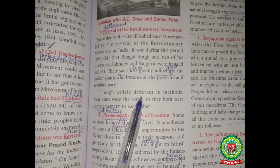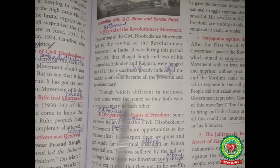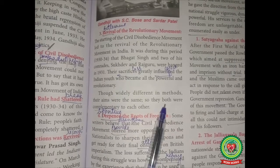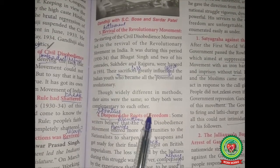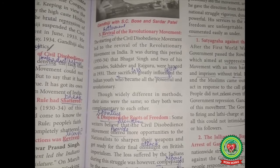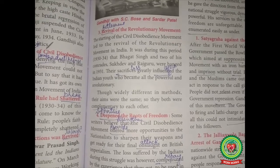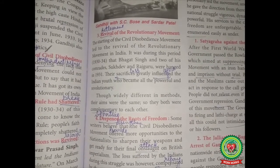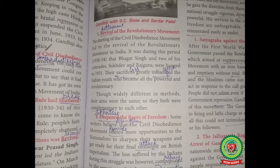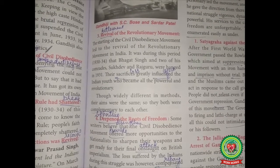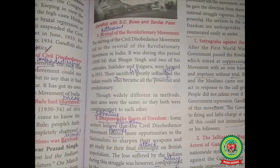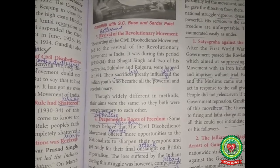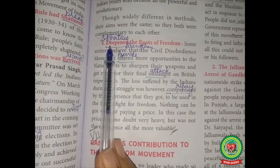Though widely different in methods, their aims were the same, so they were complementary to each other. Gandhiji always used non-violent methods and Bhagat Singh had revolutionary ideas, but their aim was the same — to free India. So they were both supportive of each other.